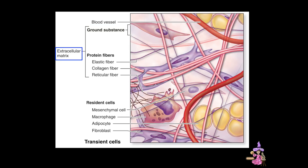Together, the fibers and ground substance comprise the extracellular matrix, which — unlike other tissue types that consist mostly of cells — is the major component of connective tissue. The third component of connective tissue is comprised of resident and transient cells. Today, I'll be introducing some of the different types of connective tissue, along with the specific cells that reside and function in that tissue.